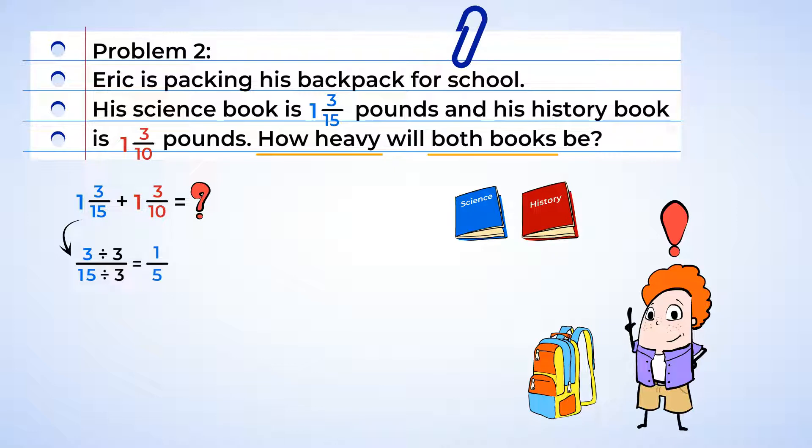Now we need to find the least common denominator of 5 and 10. Well, we take the two numbers and start making multiples of each of them. Let's put them in a table. We start with 1 times the numbers, then 2, 3. Look, we have 10 in both columns, and that's our least common denominator.